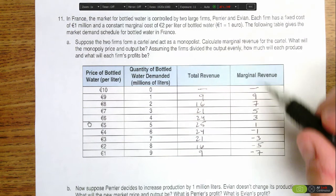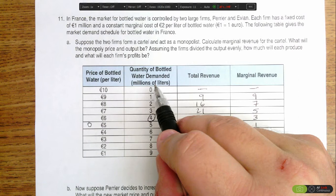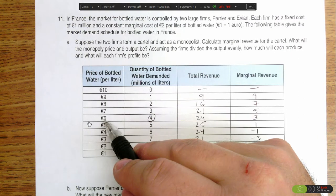This means that our optimal output is going to be 4 million bottles of water at 6 euros per bottle.